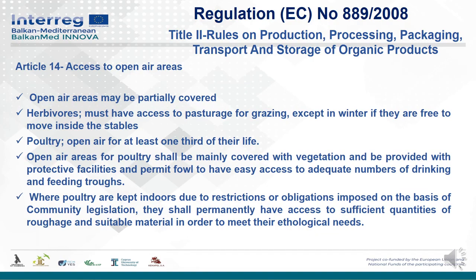Article 14: Access to Open Air Areas. Open air areas may be partially covered. Herbivores must have access to pasturage for grazing except in winter if they are free to move inside the stables. Poultry must have open air access for at least one third of their life. Open air areas for poultry shall be mainly covered with vegetation, provided with protective facilities, and allow easy access to adequate numbers of drinking and feeding troughs.